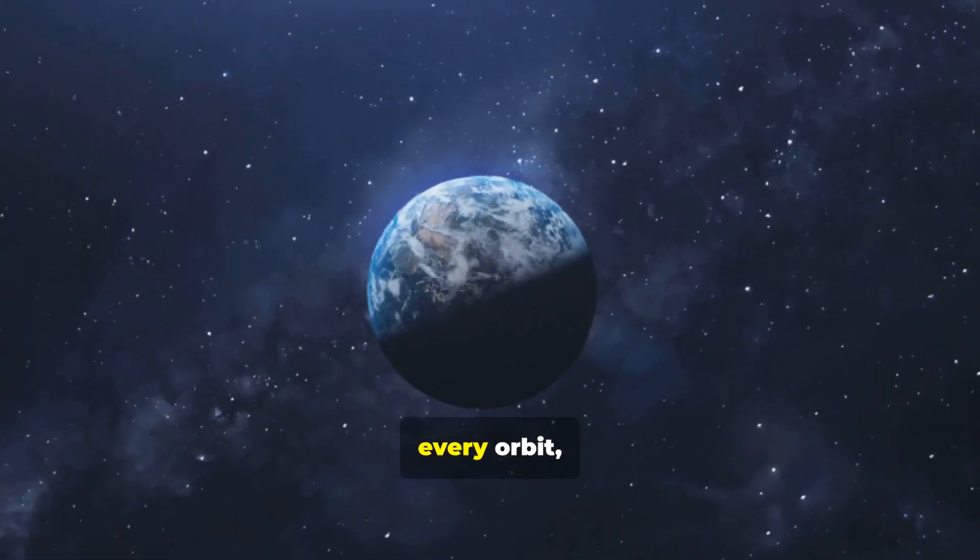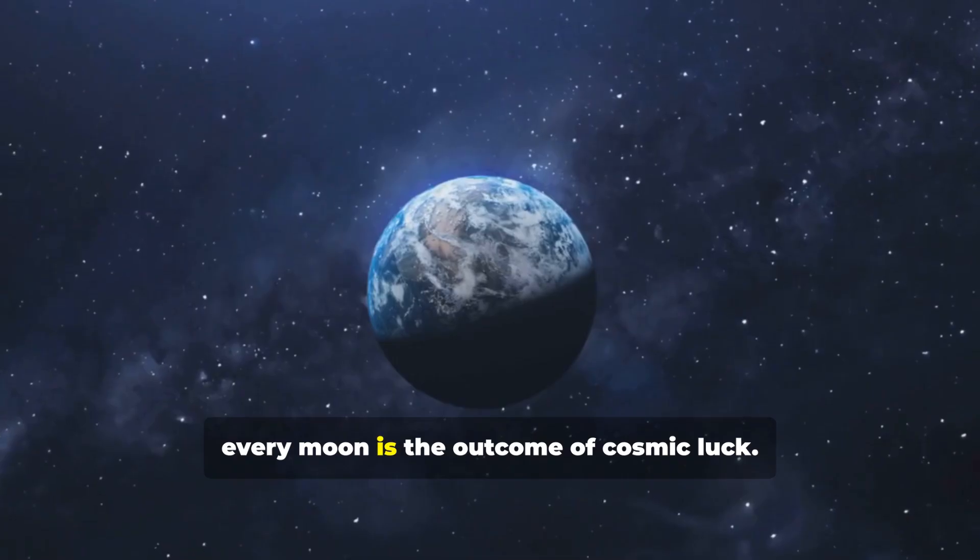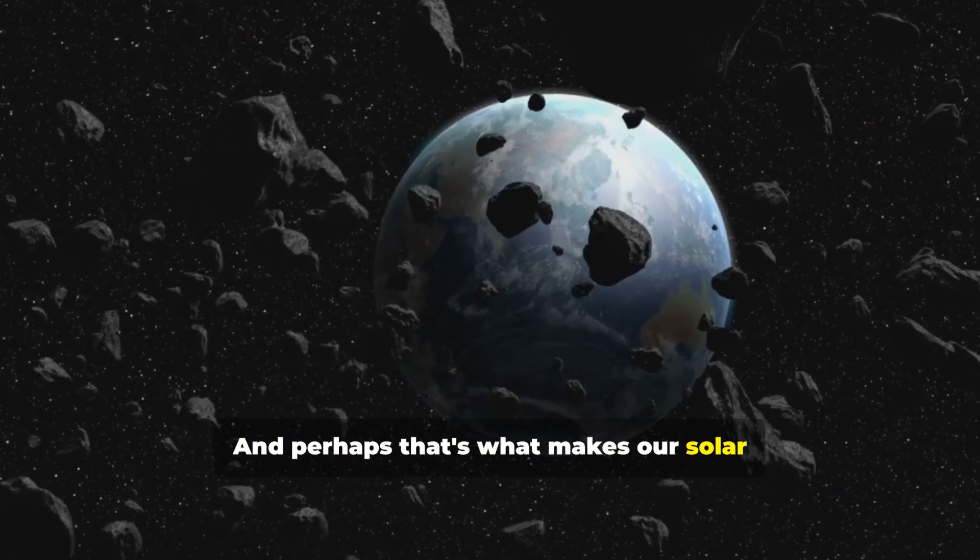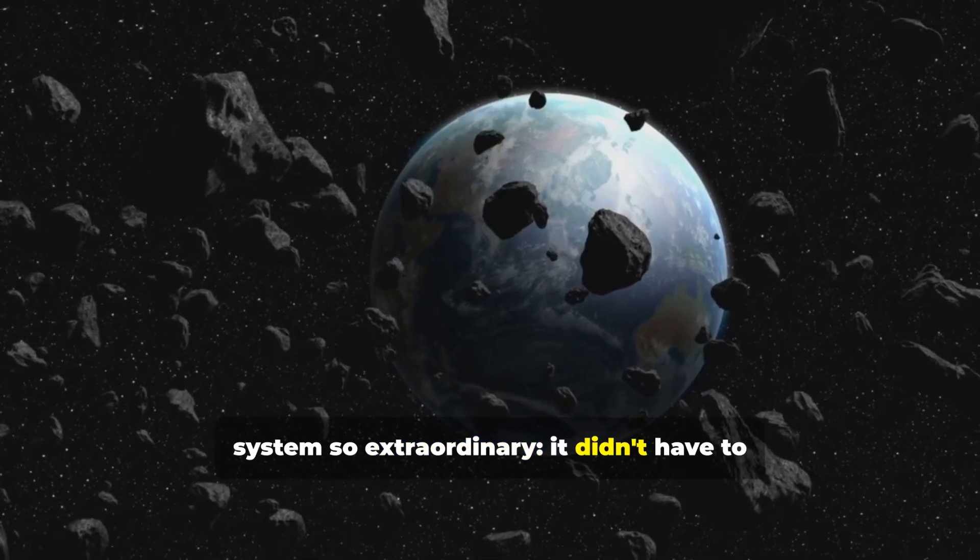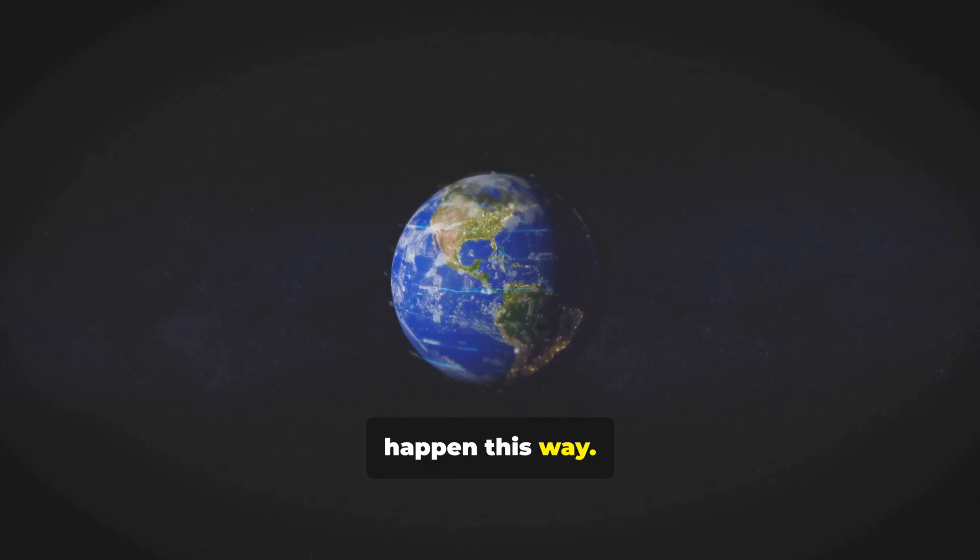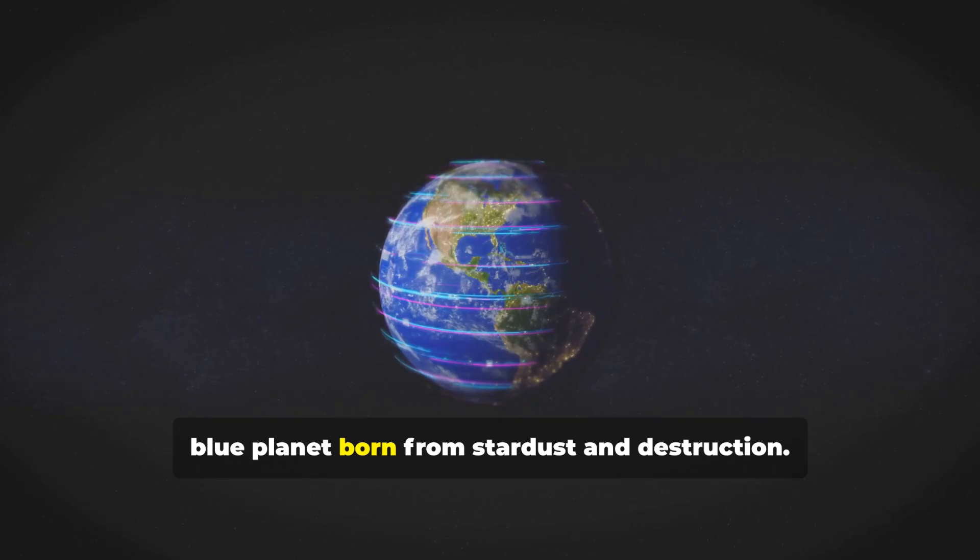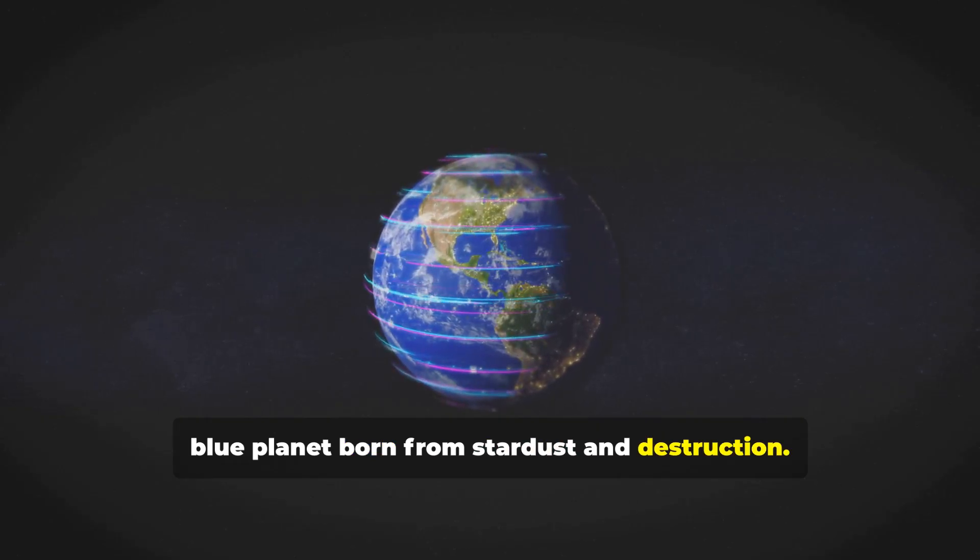Every world, every orbit, every moon is the outcome of cosmic luck. And perhaps that's what makes our solar system so extraordinary. It didn't have to happen this way. Yet here we are, living on a small, blue planet, born from stardust and destruction.